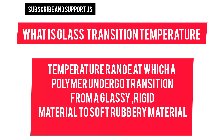What is glass transition temperature? Glass transition temperature is the temperature range at which a polymer undergoes transition from a glassy, hard, or rigid material to a soft, rubbery material. This is the glass transition temperature, Tg.